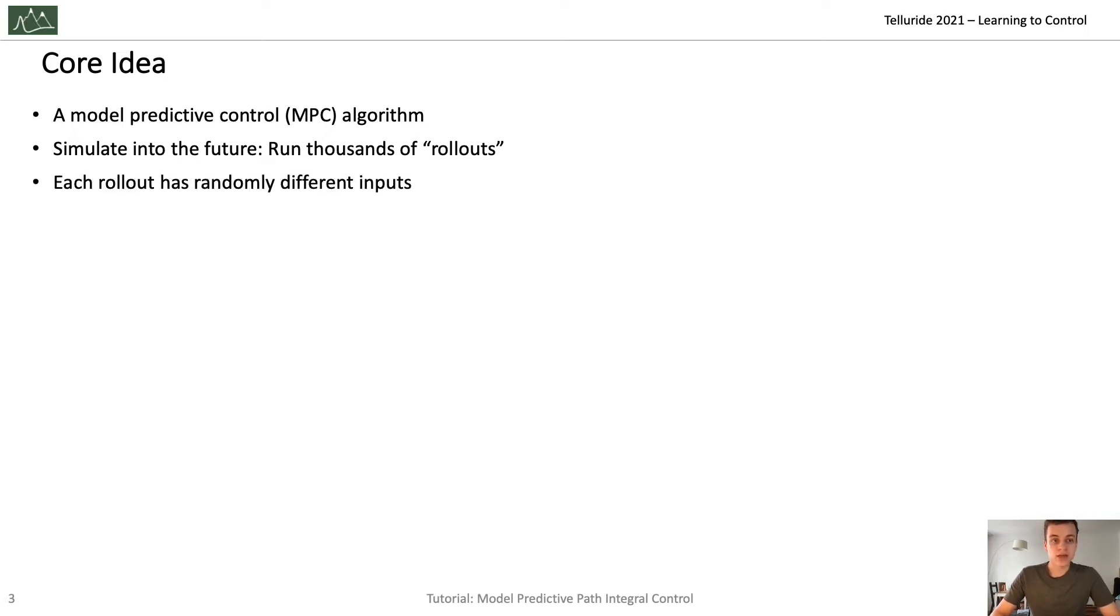Let's look at the core idea in more detail. MPPI is a type of Model Predictive Control or MPC algorithm. Its main idea is to simulate thousands of rollouts into the future. Each rollout is different in that it has a randomly different input. The idea to obtain the best input is by doing a weighted sum of the inputs that were tried.